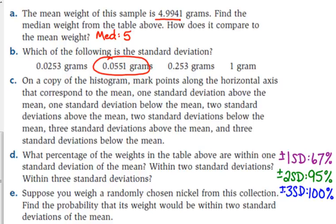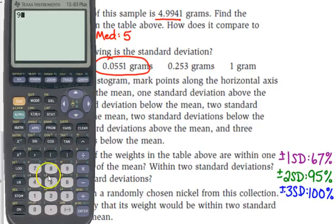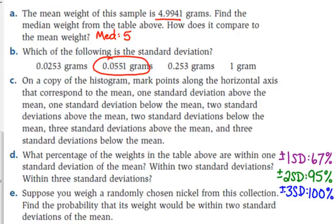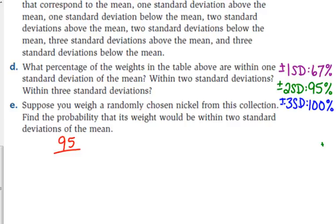So, let's look at question E. Suppose you weigh a randomly chosen nickel from this collection. Find the probability that its weight would be within two standard deviations of the mean. Well, we just figured out how many were within two standard deviations of the mean, right? It was 95%. Now, you can express that in different ways. You can express probabilities as percents, or usually we do probabilities as fractions. So, let's do 95 out of 100 and see how that simplifies. 19 out of 20 would be the probability there. 95 out of 100, which is equal to 19 out of 20. So, pretty high probability, which, you know, 95% kind of gave that away as well.